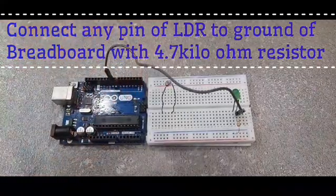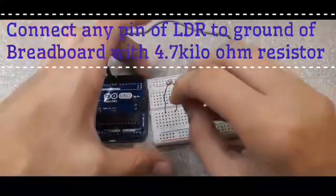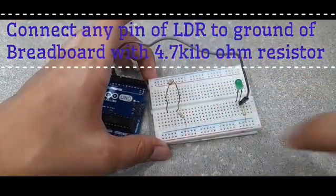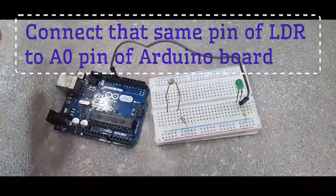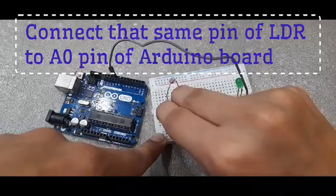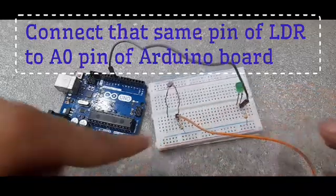Take another wire and connect that same pin, and the other end will go to the A0 pin of Arduino board, which is right here. Connect the other pin of the LDR, and that other end will go to the positive of breadboard.